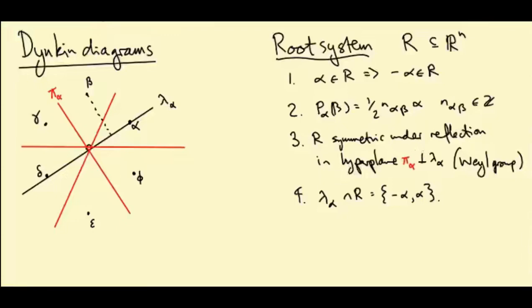Number three, the root system is symmetric under reflections in the root hyperplanes. So in this diagram, those are these red lines. These are the hyperplanes orthogonal to the roots. I'm going to call the hyperplane orthogonal to alpha, π_alpha.